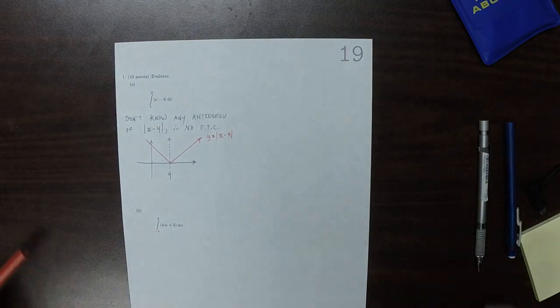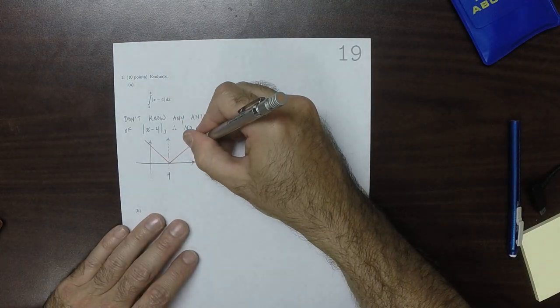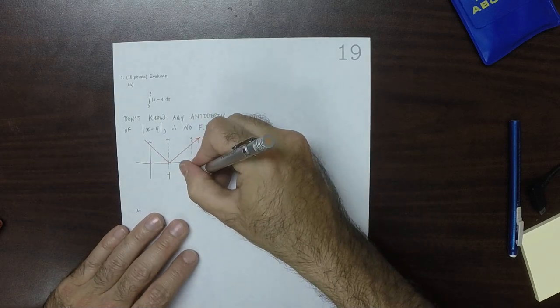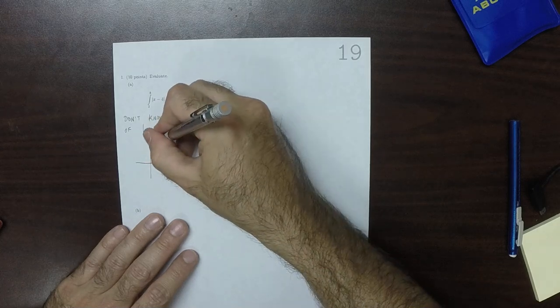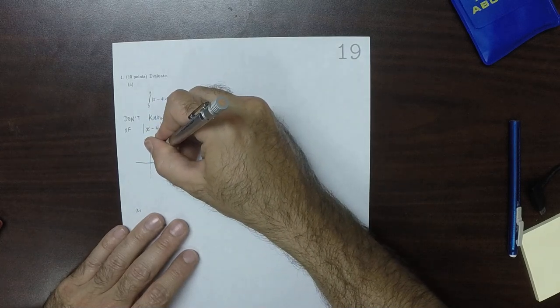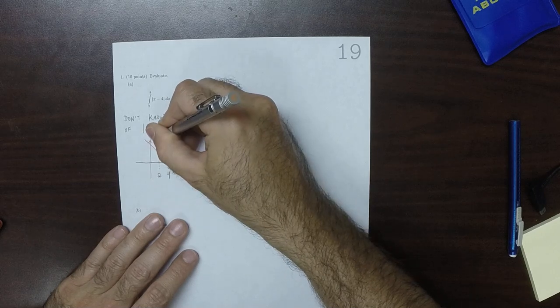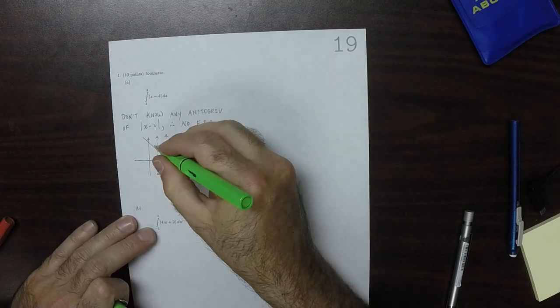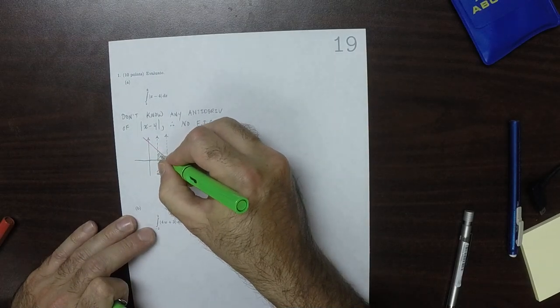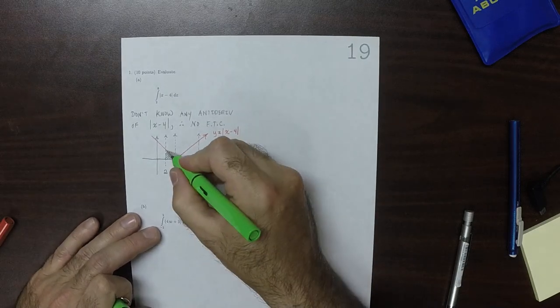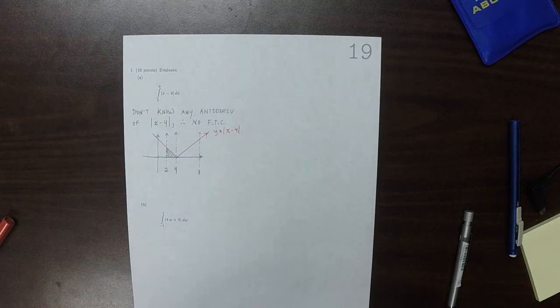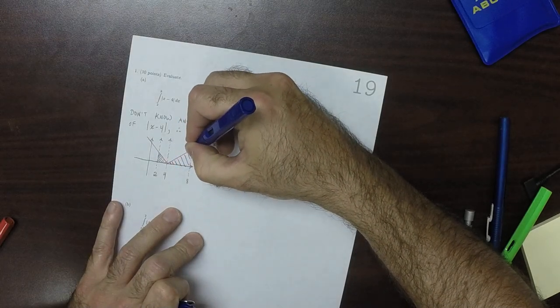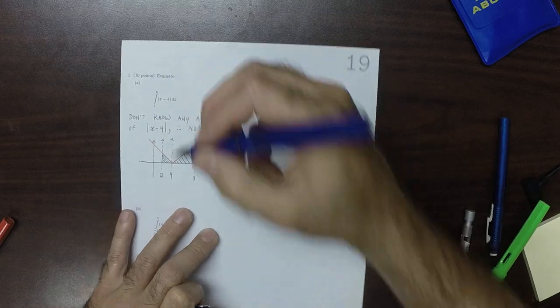And we're asked to find the integral from 2 to 8. So specifically, we're asked to find the shaded area, so that green area and then plus the blue area.